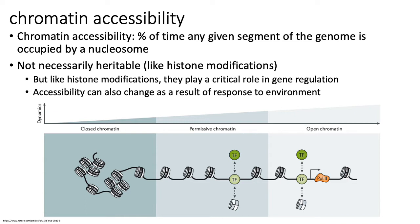Next we'll talk about chromatin accessibility and how that relates to epigenetic regulation. Chromatin accessibility can be formally defined as the percent of time that a given piece of the genome is being occupied by a nucleosome. Just like histone modifications, it's not necessarily a heritable event, but chromatin accessibility plays a critical role in gene regulation in the sense that the accessibility of a segment of the genome can change as a result of how that cell responds to an environment.